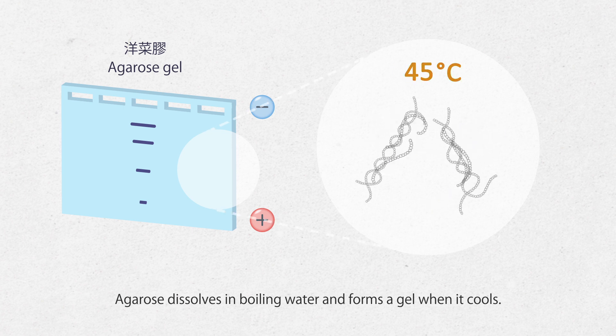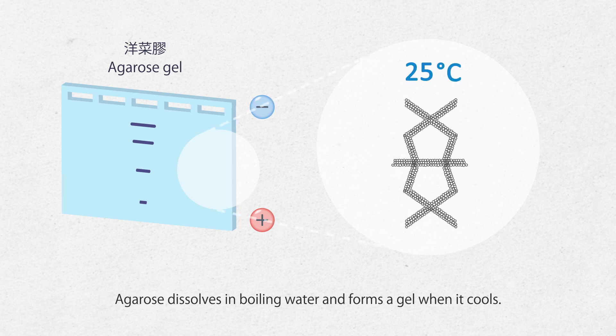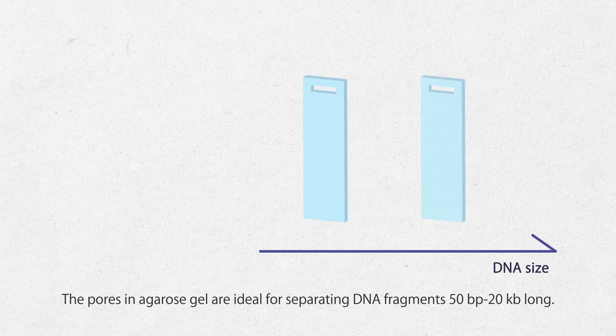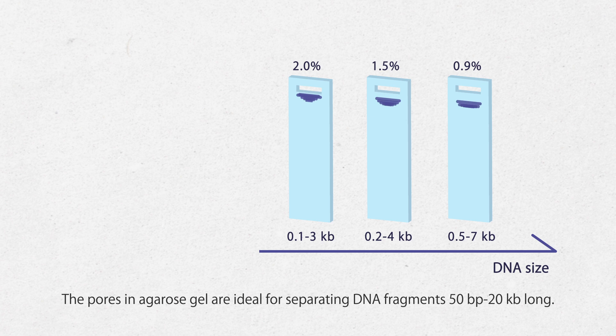Agarose dissolves in boiling water and forms a gel when it cools. The pores in agarose gel are ideal for separating DNA fragments 50 to 20,000 base pairs long.